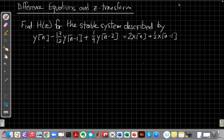Okay, so for the example we're doing today, difference equations and the Z-transform, we want to find the system function H(z) for the stable system described by the difference equation: y[n] - (13/12)y[n-1] + (1/4)y[n-2] = 2x[n] + (1/2)x[n-1].